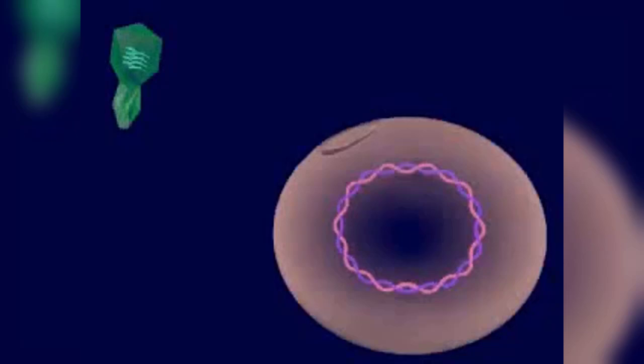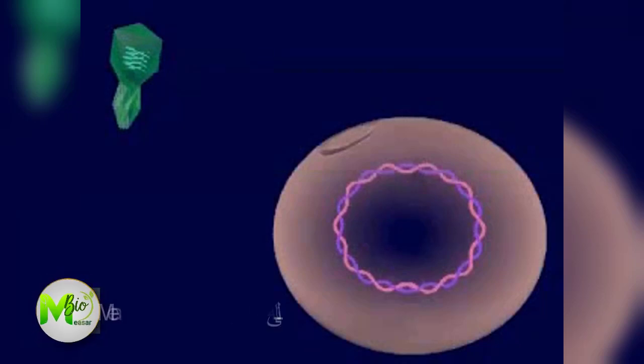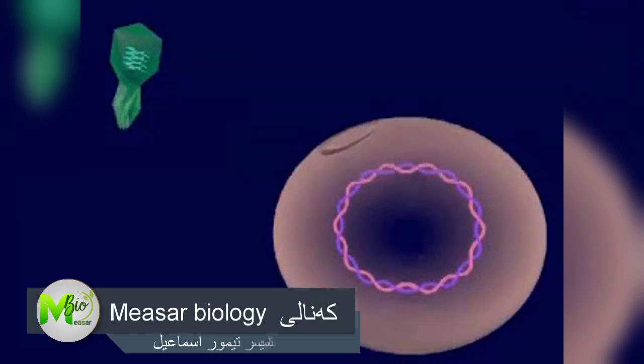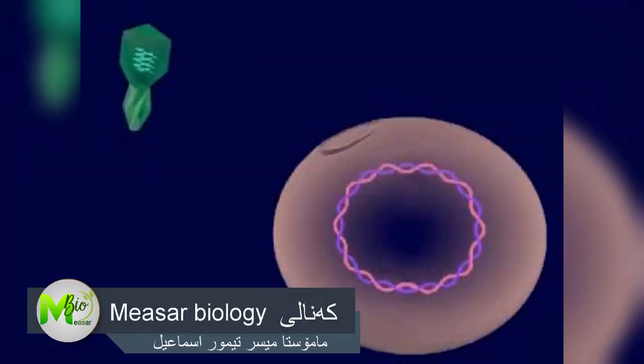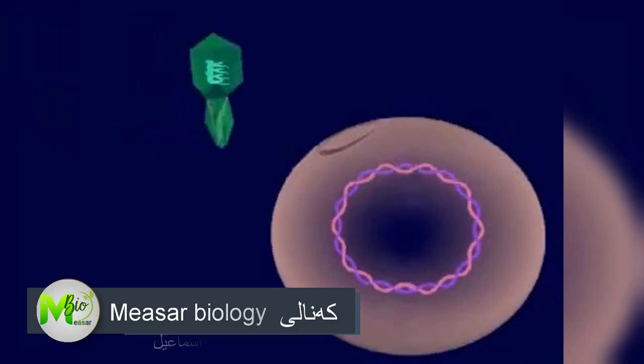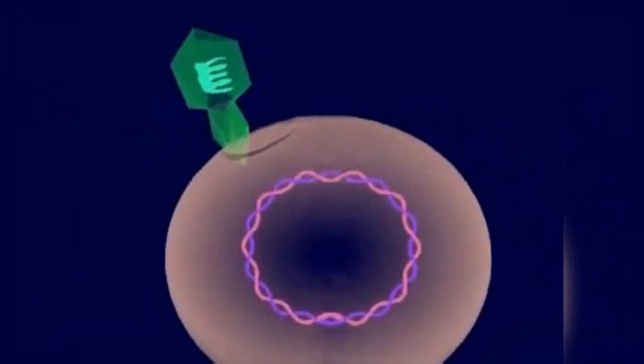In a lysogenic cycle, viral nucleic acid becomes part of the host cell's chromosome and is replicated with it. Eventually, the virus enters a lytic cycle and kills the host cells.